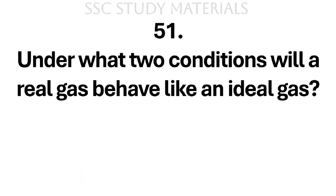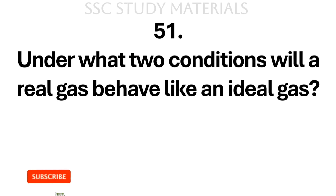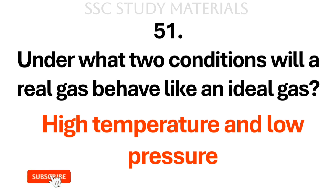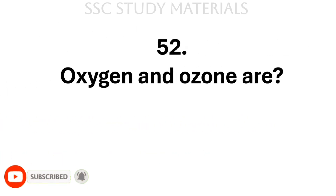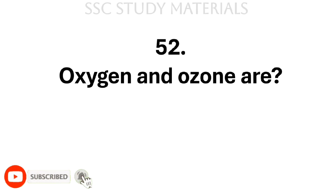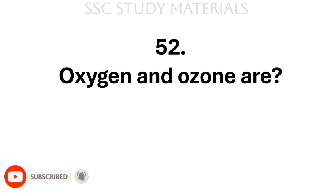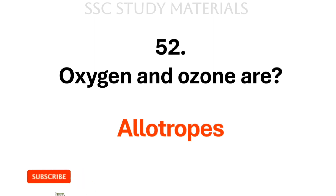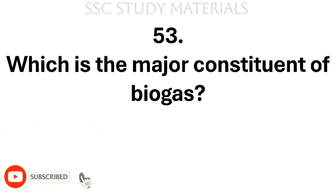Question No. 51: Under what two conditions will a real gas behave like an ideal gas? Answer: High temperature and low pressure. Question No. 52: Oxygen and ozone are? Answer: Allotropes. Question No. 53: Which is the major constituent of biogas? Answer: Methane.